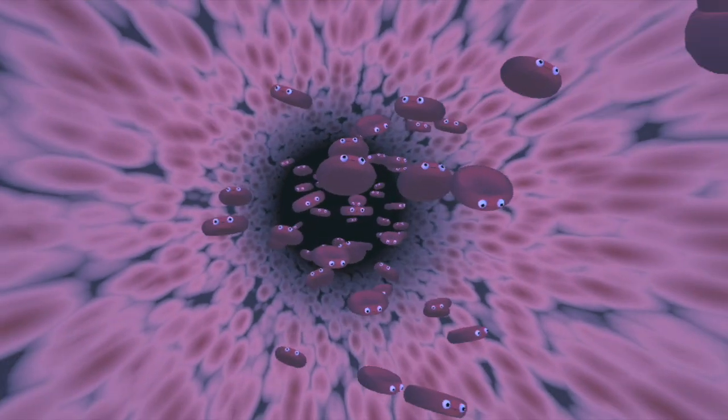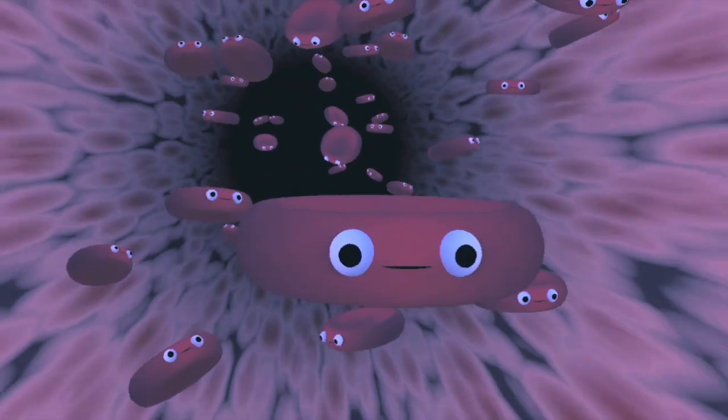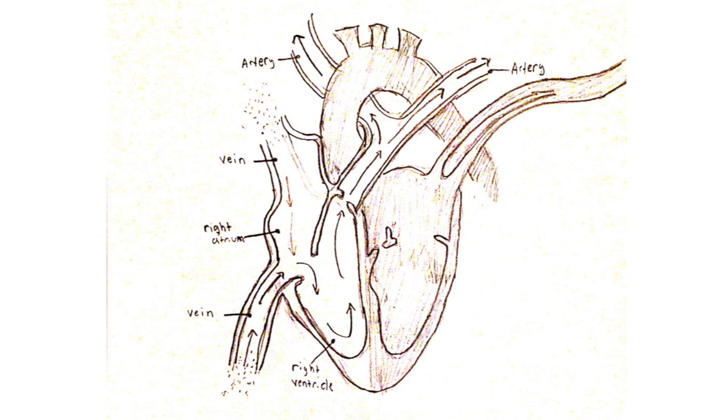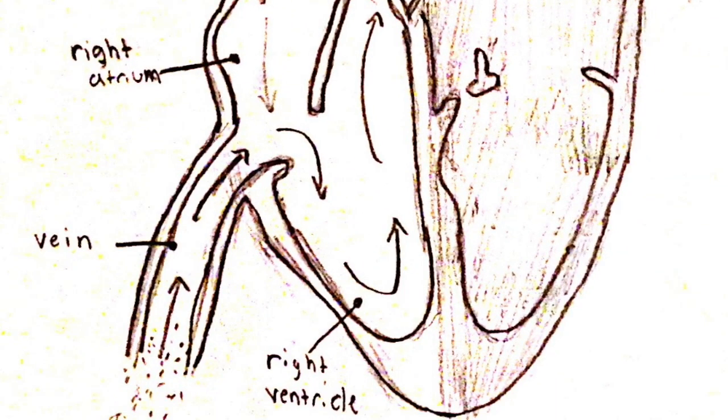Soon we were back in the bloodstream, racing back towards the heart through capillaries, venules, and veins. This time we were pumped through the right atrium, and then the right ventricle, and in a few seconds we were back in an alveolus. The diaphragm pushed on the lungs, and we were on our way out of the body.